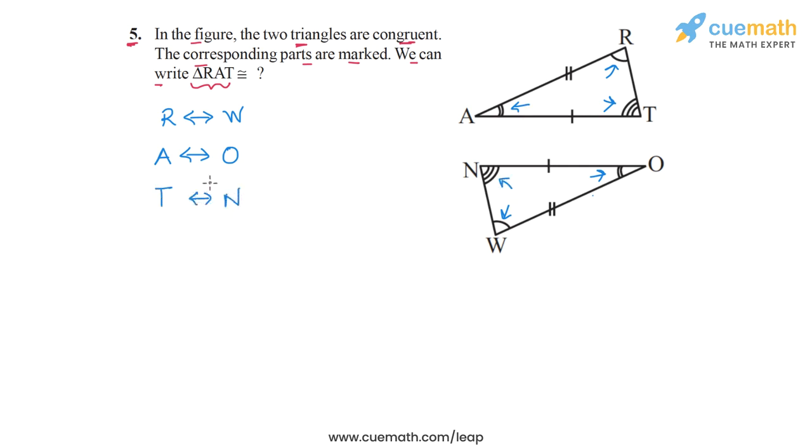So this means that triangle RAT, if we now take triangle RAT, this will be congruent to R corresponds to W. So we write W first.